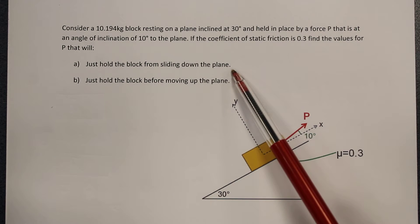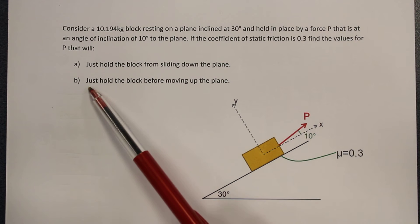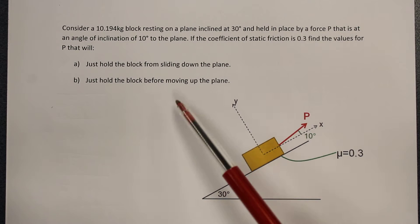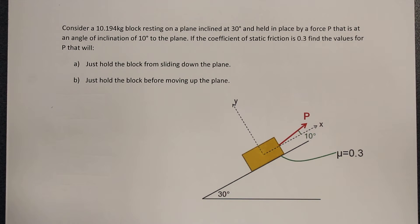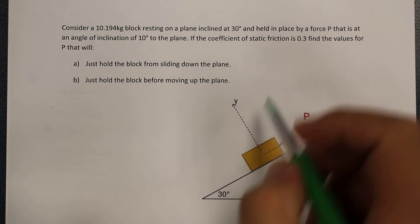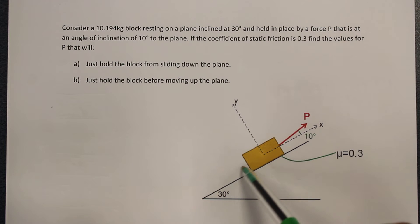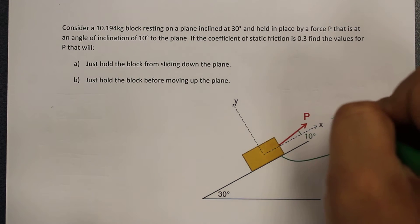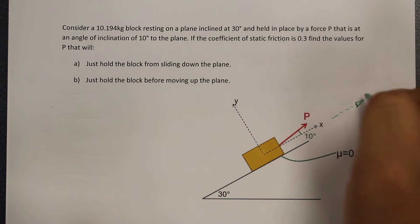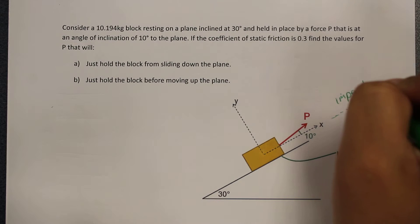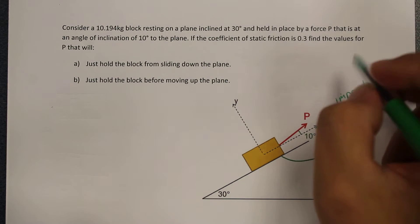This has already been solved in a previous video. And to just hold the block before moving up the plane — for this case, the impending motion is that the block is just about to move up the plane. We can see the block is just about to move up this section here. Our impending motion is towards the X direction, so here we can call this the impending motion.